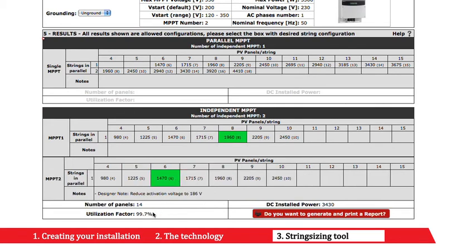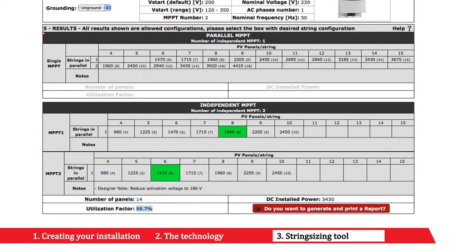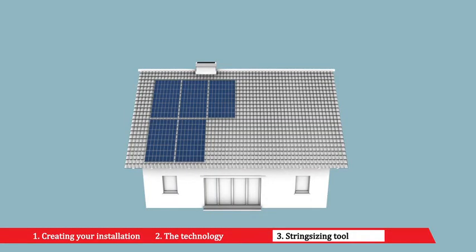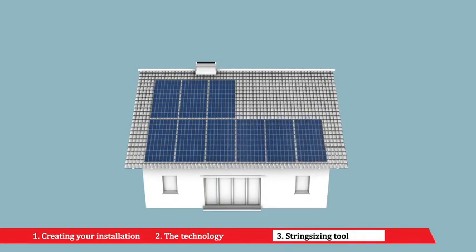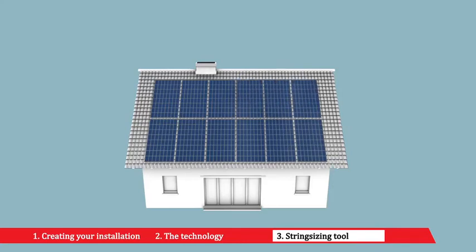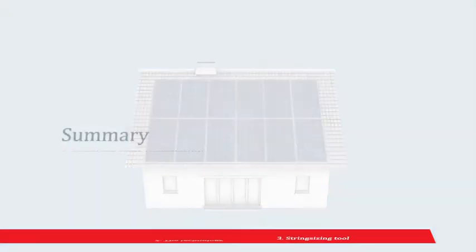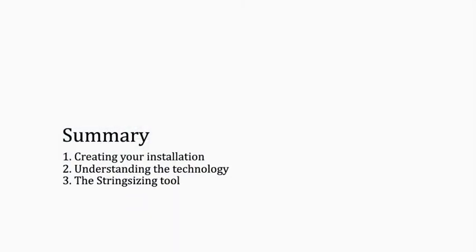From your data, the online string sizing tool will automatically give you different configuration options. This will include variations for the dual MPPT channels. You can then use this information to find the best configuration for your solar installation.